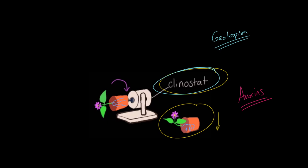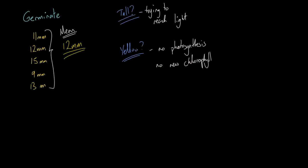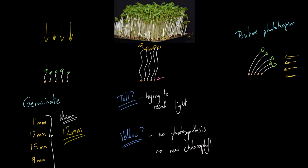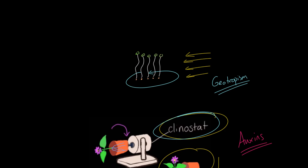As a final point, you can also set the clinostat so it's pointing upwards and rotating round. If you have your plants with light coming from one side but they are being continually rotated, the light is evenly distributed among all surfaces. They will still grow up nice and straight and will not show phototropism, because the clinostat ensures that all sides are equally illuminated.